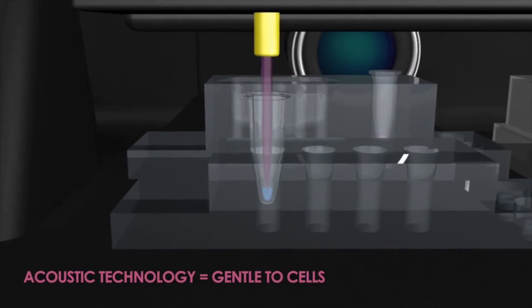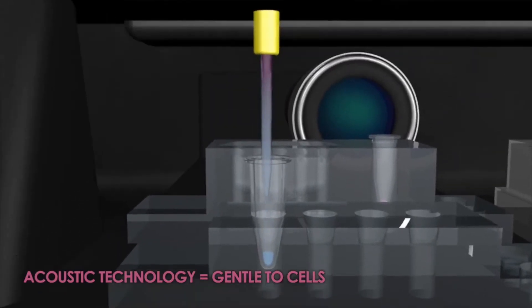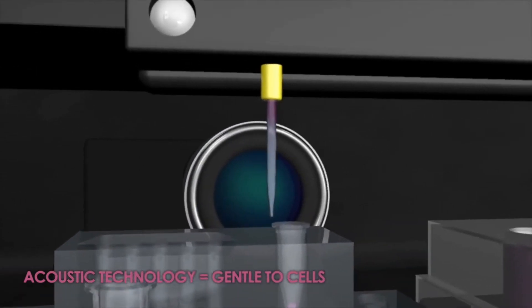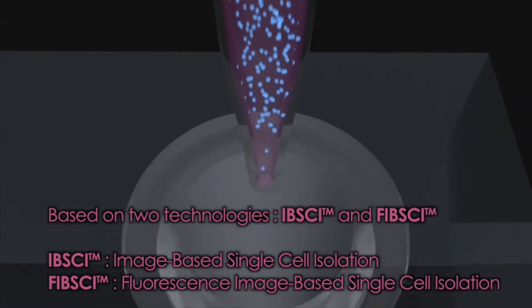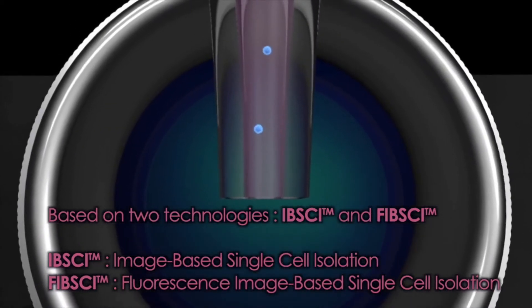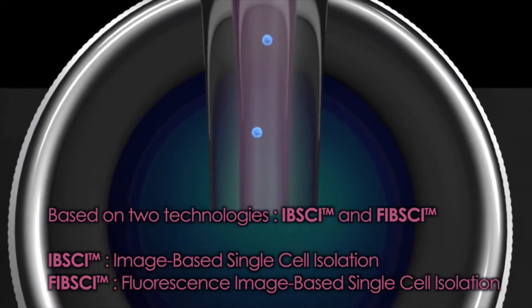Samples are generally aspirated into a reusable glass capillary in volumes ranging from a few hundred nanoliters to over 50 microliters. Our single cell isolation is image-based, and once in front of the camera, two imaging modes allow for both bright field and fluorescence data acquisition.